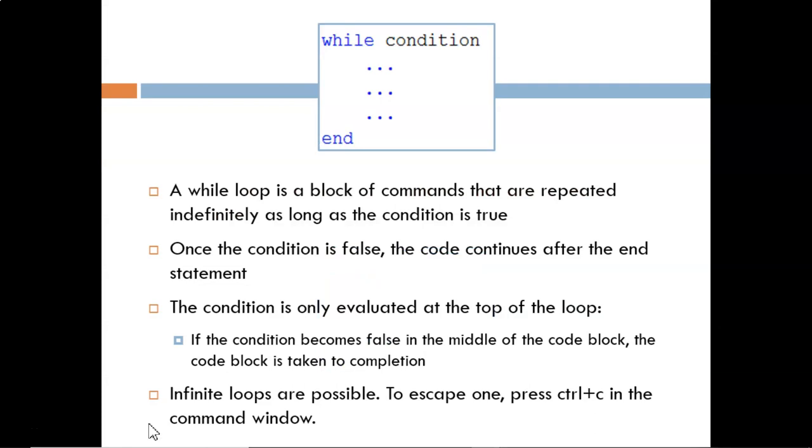While loops allow us to repeat a section of code as long as its condition is true. Any statements that fall between the while and end will be processed in order each time through the loop. Once the condition evaluates as false, then we continue beyond the end statement.